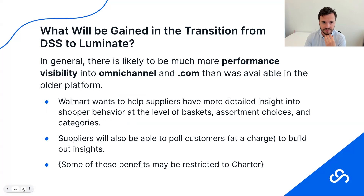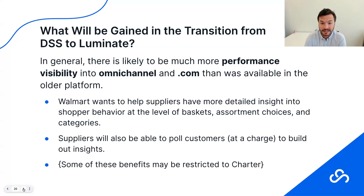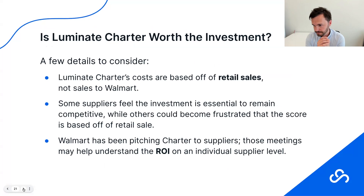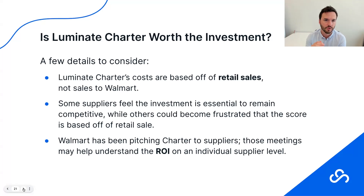So what are we going to gain? It's just about performance visibility for omnichannel and .com. Some of the reports are limited depending on whether you have Charter or not. With Charter, you can customize a lot more of your data. With Basic, you will have the basics — everything you need to report to your buyer and leadership about your performance at Walmart. What is the Charter investment? The pricing is based off of retail sales, not sales to Walmart. This has been really confusing and frustrating for some people.